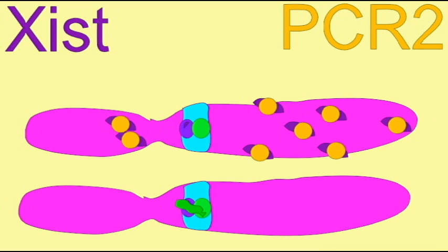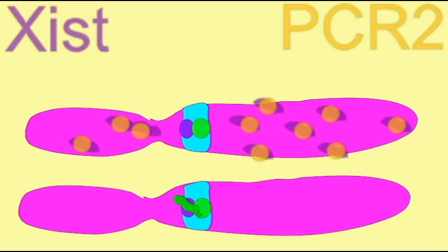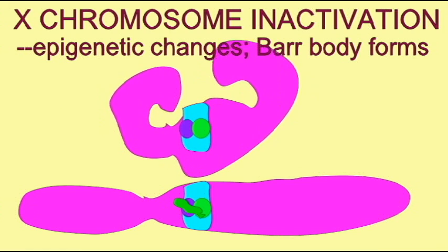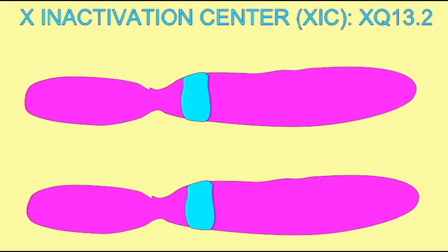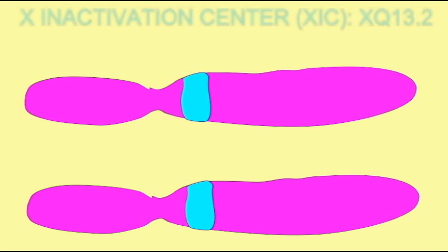Xist binds the X chromosome in cis and spreads a silencing complex. The Xist RNA measures about 17 kilobases and includes a 1.6 kilobase region known as RepA.